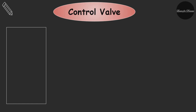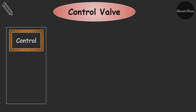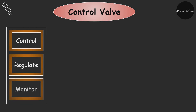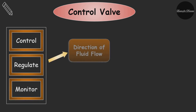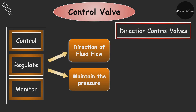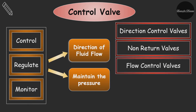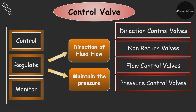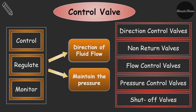Now let's see control valves. There are various types of control valves available. The main aim of a control valve is to control, regulate, and monitor the direction of fluid flow and maintain the pressure. The five main types are direction control valves, non-return valves, flow control valves, pressure control valves, and shut-off valves.